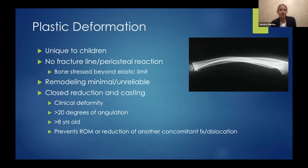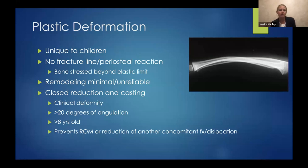Plastic deformation is a very unique thing for children — a series of small fracture lines you can't really detect on x-ray, where the bone is stressed beyond its elastic limit. Remodeling potential is quite minimal and unreliable. If there is a clinical deformity, an older patient, or another fracture being prevented from reduction, we recommend closed reduction and casting for plastic deformations.